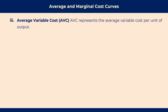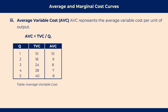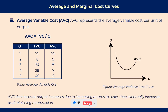The second average cost is average variable cost, which represents the average variable cost per unit of output. The formula is: average variable cost equals total variable cost divided by quantity. From the table, we divide total variable cost by quantity to determine average variable cost. Average variable cost is initially declining, then increasing. We can say that average variable cost decreases as output increases due to increasing returns to scale, then eventually increases due to diminishing returns to scale.